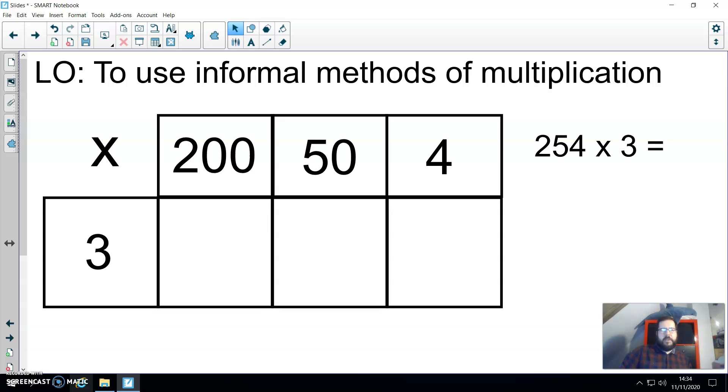So in one box, we're going to have 3 multiplied by 4. In the other, we're going to have 3 multiplied by 50. And in the last one, 3 multiplied by 200. Obviously, 3 times 4, we work that one out first. Always, always starting with the ones. So 3 times 4 is 12. Then we move on to the tens, 3 times 50, which is 150. And then we move on to the hundreds, 3 times 200, which is 600. And then finally, at the end, we add them together, 762.